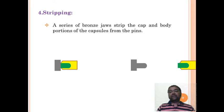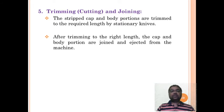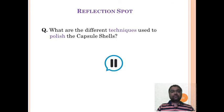Next is trimming. In trimming or cutting, the stripped cap and body portions are trimmed to required length by stationary knives. After trimming to the right length, the caps and body portions are joined and ejected from the machine. We are just joining it, not locking, and it is removed from the machine.